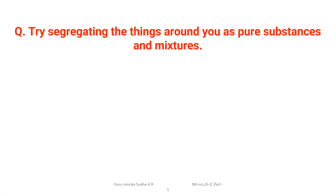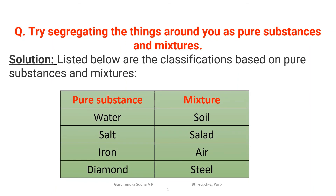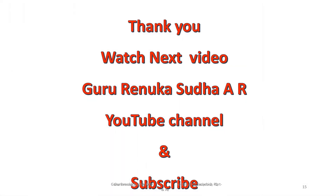The last question asks you to segregate things around you as pure substances and mixtures. Pure substances include water, salt, iron, and diamond. Mixtures include soil, air, and steel. In this way, we can differentiate which ones are pure substances and which ones are considered mixtures.